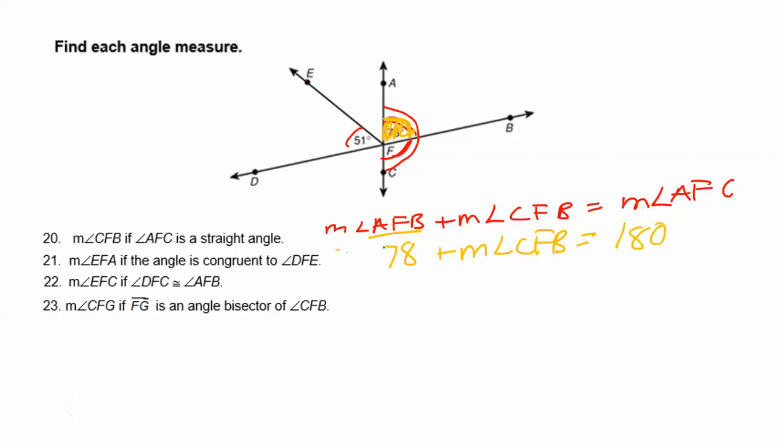So we're looking for the measure of angle CFB, and we could call that X if you don't like all those letters there, but all we have to do is subtract 78 from both sides, and we will find the measure of CFB, which is what we're looking for. So you go ahead and finish that up, take 180 minus 78, and you'll get your answer for number 20.